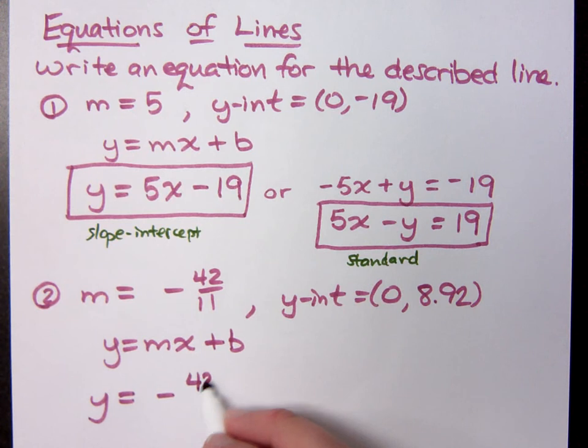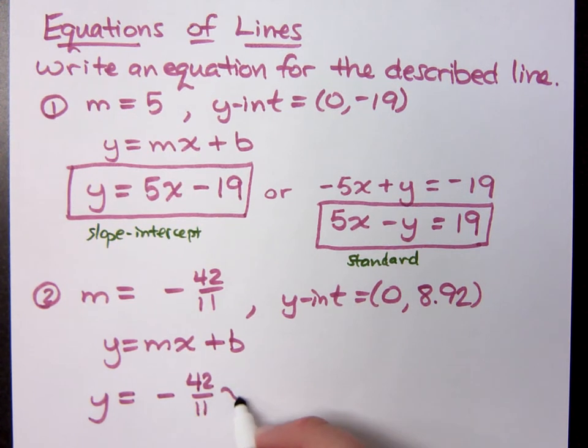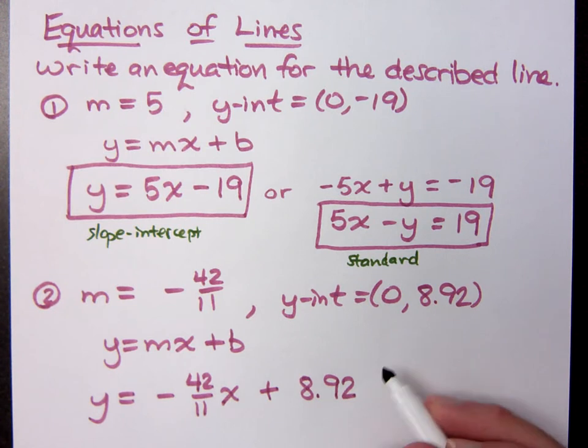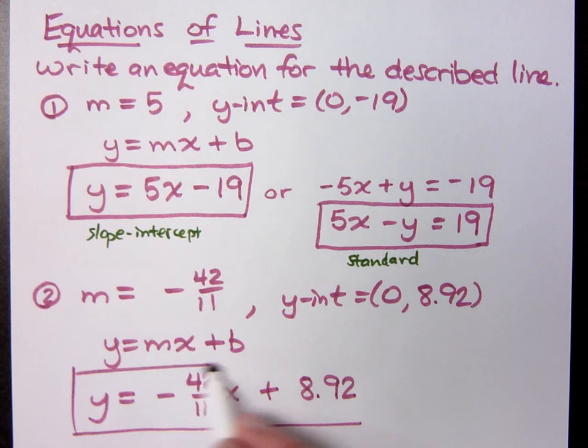y equals negative 42 elevenths x plus 8.92. Putting this guy in standard form is not going to be pretty, so I would just leave it like this. Don't do any more to this than you have to. Questions about that guy? No?